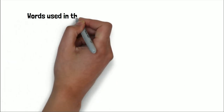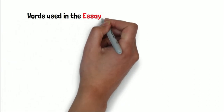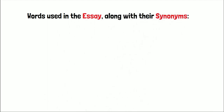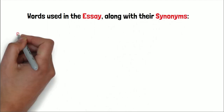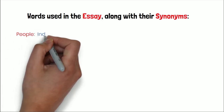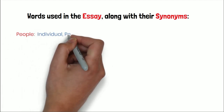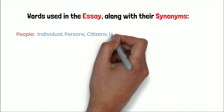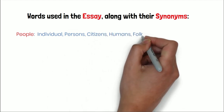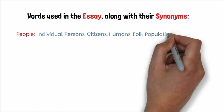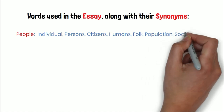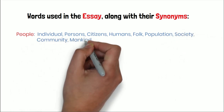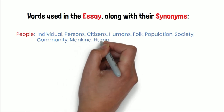Words used in the essay along with their synonyms. Number one: People — individual, persons, citizens, women, folk, population, society, community, mankind, humanity.